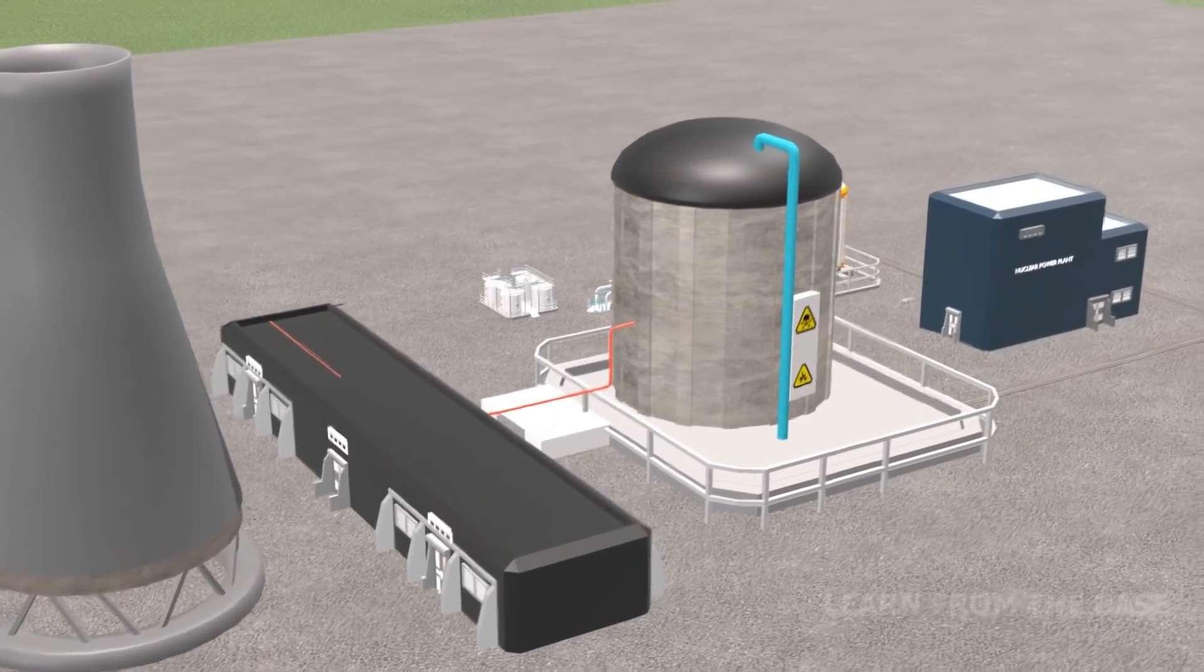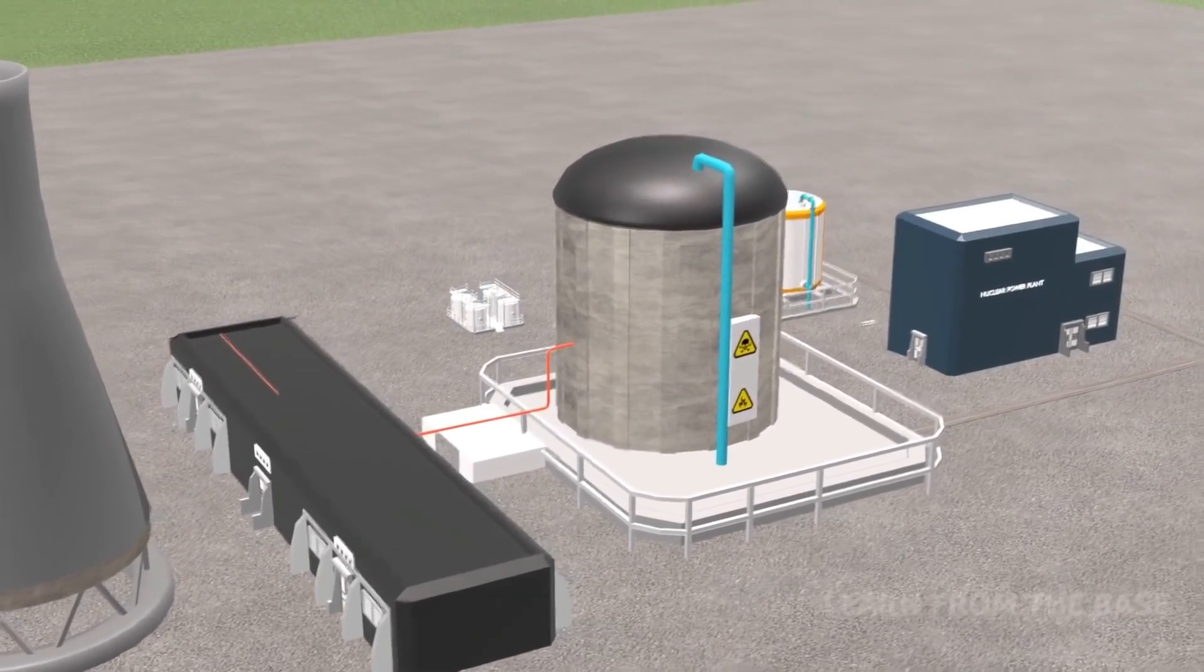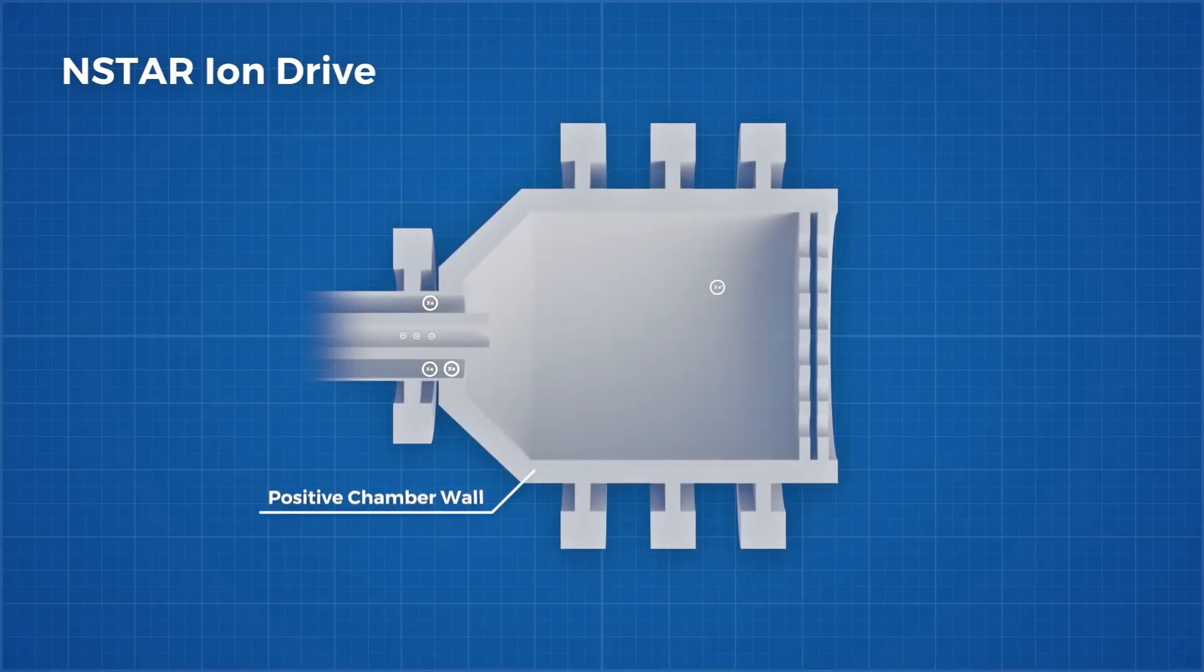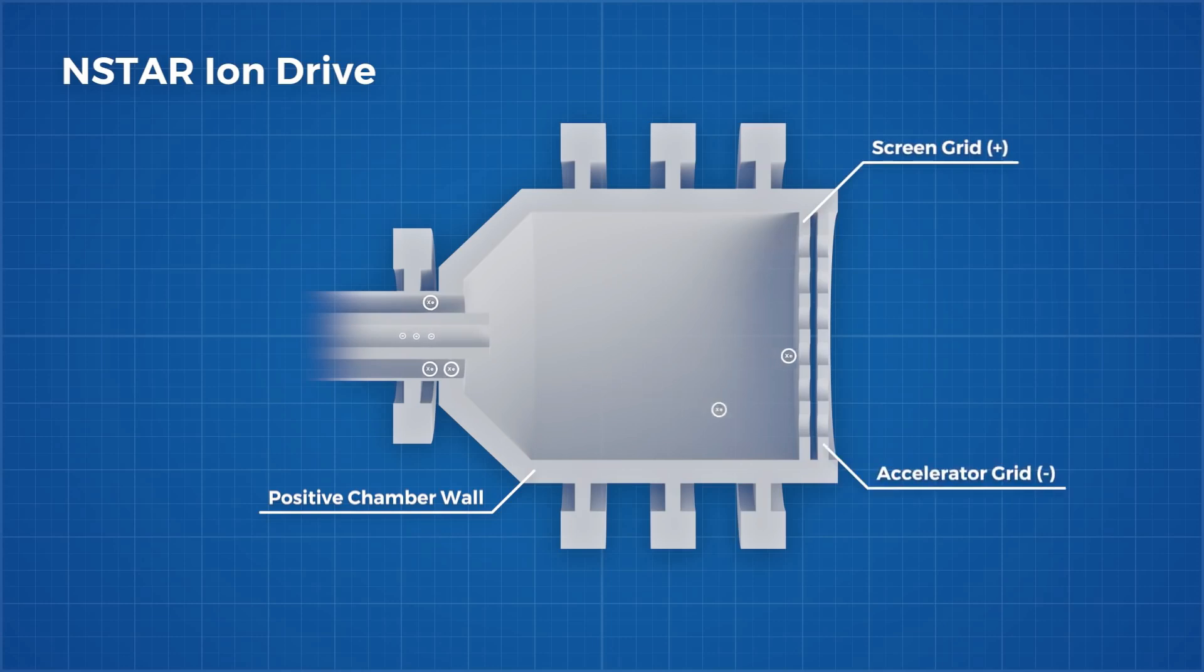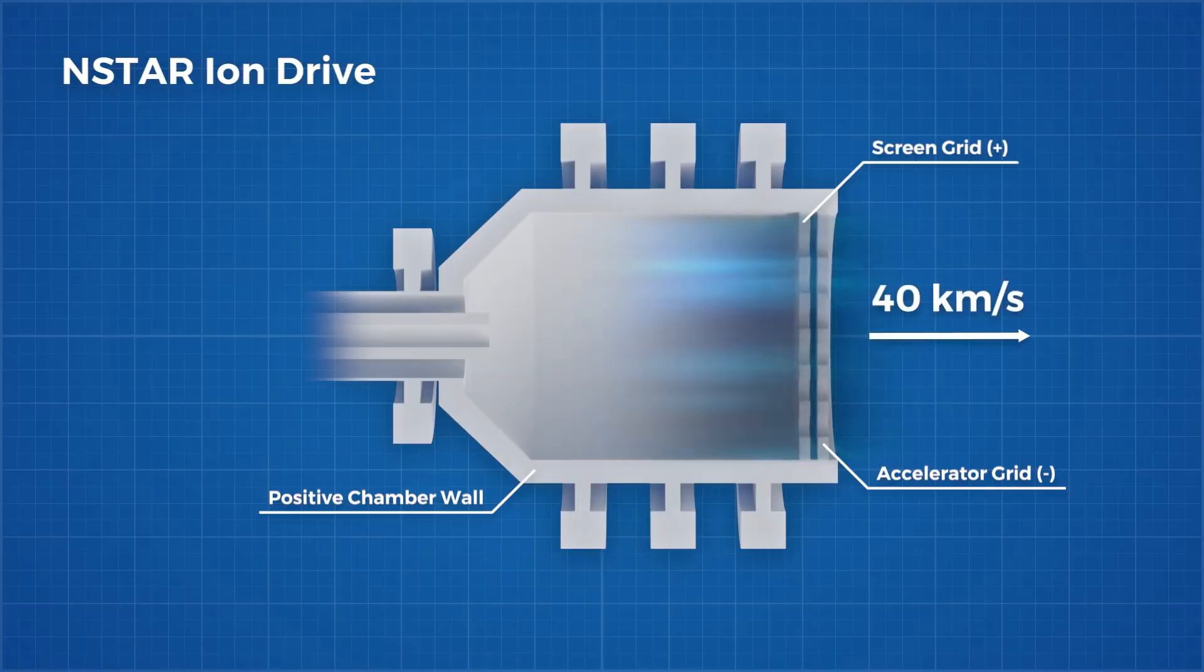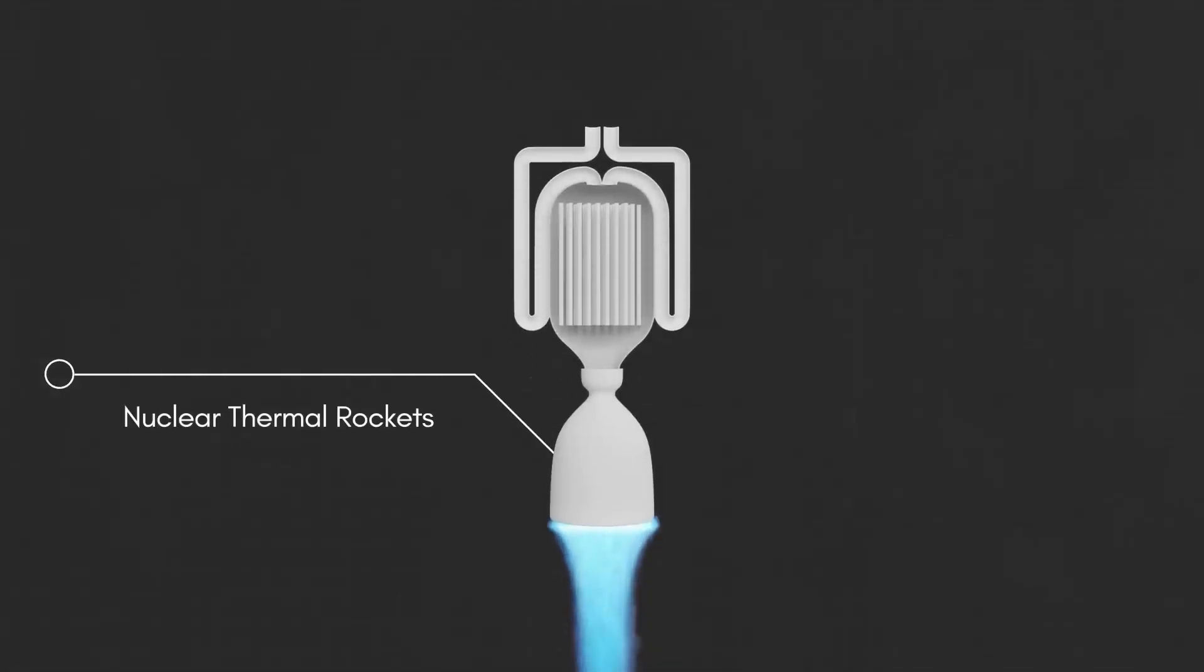Second is the nuclear electric engine. The process of producing electricity is similar to nuclear power plants. In a nuclear electric engine, we produce electricity with the help of a small nuclear reactor. Now we ionize xenon ions with the help of this electricity, which we pass through the nozzle and generate acceleration. And xenon ions come out at a speed of 40 km per second, which is 5 times more than nuclear thermal engine.